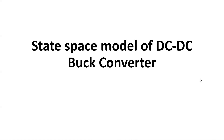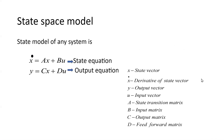Hello everyone. In this video we are going to see the state space model of a DC-to-DC buck converter. The state space model of any system consists of two equations: the state equation and the output equation. The state equation is x-dot equals Ax plus Bu, and the output equation is y equals Cx plus Du.